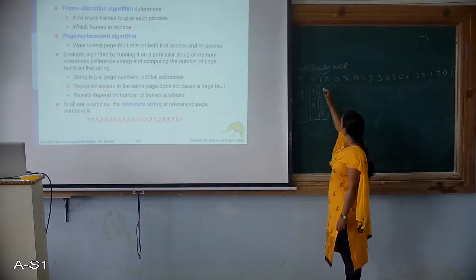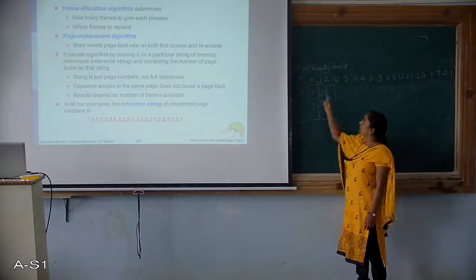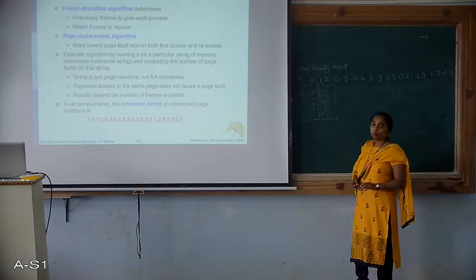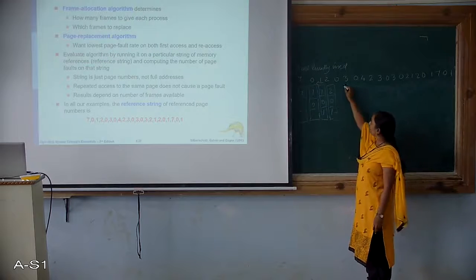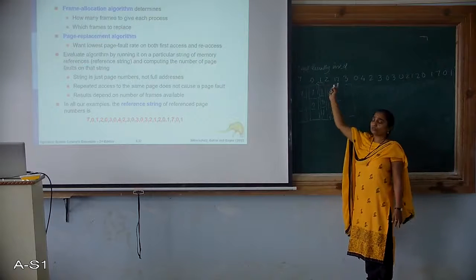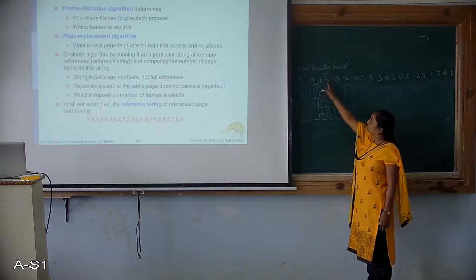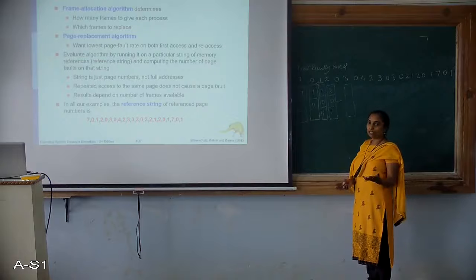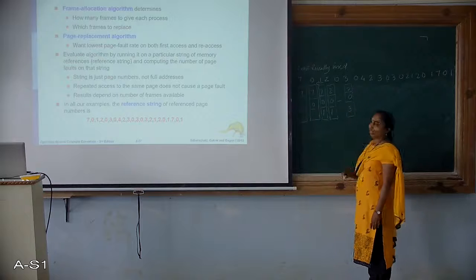Then 2 is required. We look backward — which is the page used farthest in the past? Among 7, 0 and 1, page 7 is the least recently used — 0 and 1 are more recently used than 7. So replace 7 with 2. Next we require 0 — 0 is there. Then we require 3 — out of frames 2, 0 and 3, which was not used recently? 2 was brought in most recently, 0 was used just before. 1 is farthest back in time — so replace 1 with 3. Frames: 2, 0, 3.